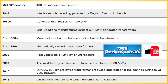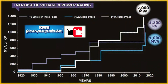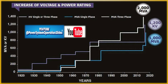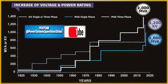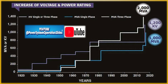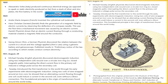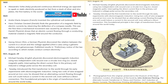In 1831, Michael Faraday discovered the principle of electromagnetic induction, which laid the foundation for the development of transformers. Faraday's law of induction states that a changing magnetic field within a coil of wire induces an electromotive force (EMF) in the coil. This principle is essential for the operation of transformers.